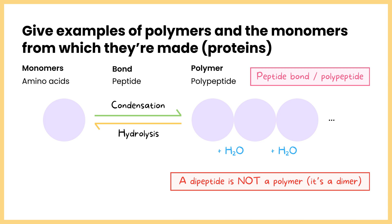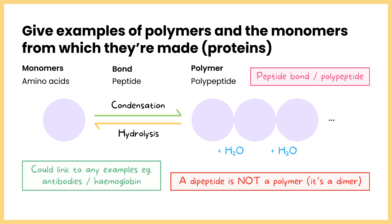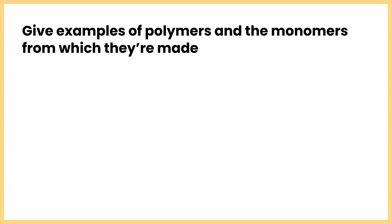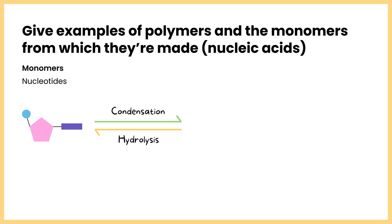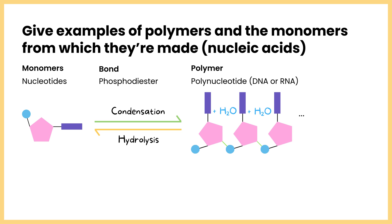Because there are so many different types of proteins, questions might give you an example like an antibody or haemoglobin and ask what the monomer is — but it would still be amino acids. The final example comes under nucleic acids: DNA and RNA. The monomers of these are nucleotides, and where many nucleotides join together via condensation reactions forming phosphodiester bonds, a polynucleotide forms. DNA nucleotides make up a DNA polynucleotide, and RNA nucleotides make up an RNA polynucleotide.